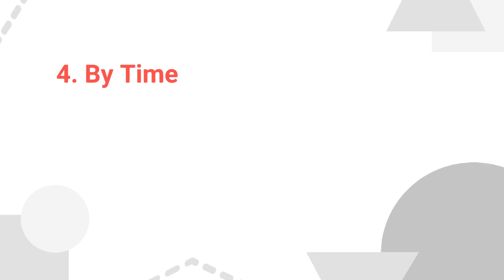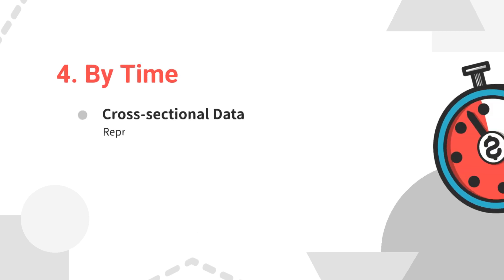By time, it is divided into two subtypes. Cross-sectional data represents a single point in time, like a snapshot.